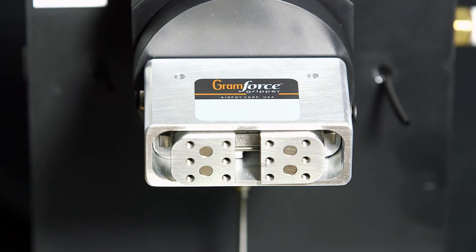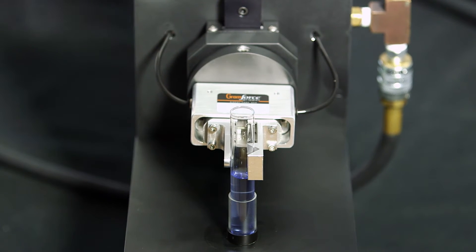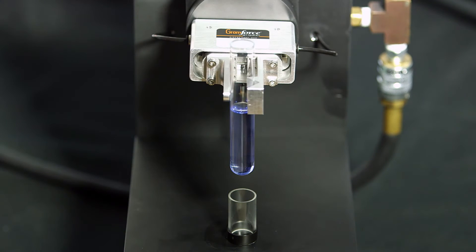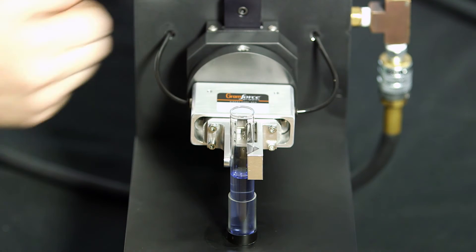Let's watch the gripper in action. Brittle parts are ideal candidates for the Gram Force Gripper. In this case, we are holding a thin walled glass test tube with only 40 grams of force.